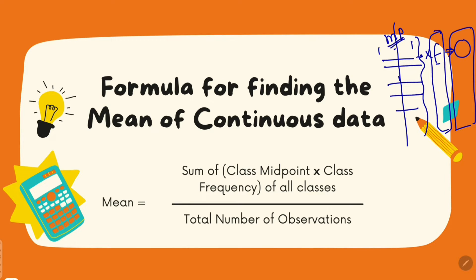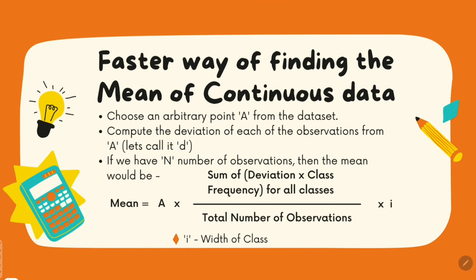To get the mean faster, there is one more method. We take one of those classes as an arbitrary point — let us call it A. This is an arbitrary point in our observation. What we will do is find the distance — that is, the deviation — of each of the other observations from this arbitrary point. We find the deviation of each point from our arbitrary observation and name them d1, d2, d3, and so on, with n number of observations.